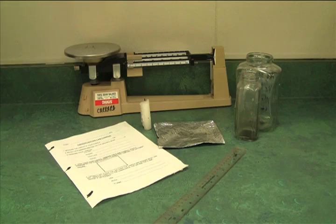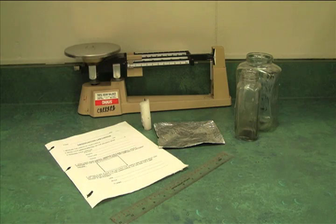For our candle observation lab, we'll need our lab sheet and a candle, some aluminum foil, a metric ruler, two jars, one small and one large, and a balance beam.